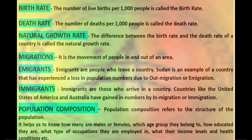After understanding birth rate, death rate, natural growth rate, emigration and immigration, let's look at population composition. How crowded a country is has very little to do with its level of economic development — for example, both Bangladesh and Japan are very densely populated, but Japan is far more economically developed. To understand the role of people as a resource, we need to know how people vary in their age, sex, literacy level, health condition, occupation and income level. Population composition refers to the structure of the population and helps us understand how many are males or females, what age group they belong to, how educated they are and what type of occupation they are employed in.